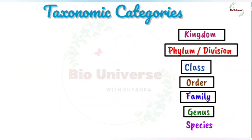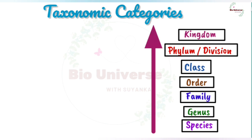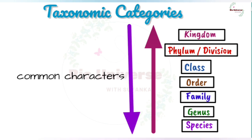As we go higher from species to kingdom, the number of common characteristics decreases. Lower the taxa, more the characteristics that members within the taxon share. Higher the category, greater is the difficulty of determining the relationship to other taxa at the same level; hence the problem of classification becomes more complex.